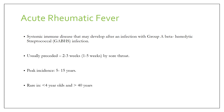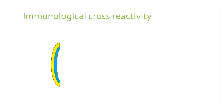It is usually preceded by sore throat, generally by two to three weeks, but the range is from one to five weeks. The peak incidence is between 5 to 15 years of age, so it is mainly a pediatric disease — that is why it forms a very important long case. It is very rare in children who are less than four years old and more than 40 years of age.